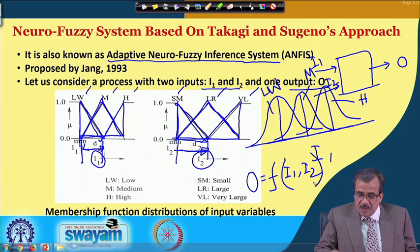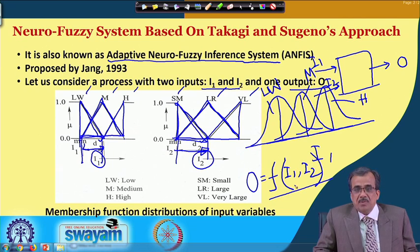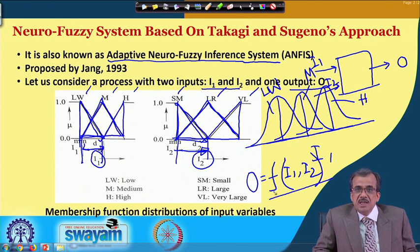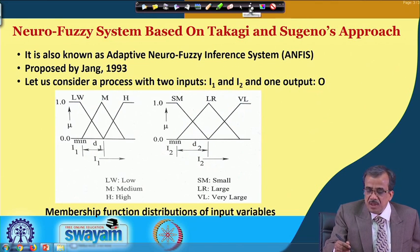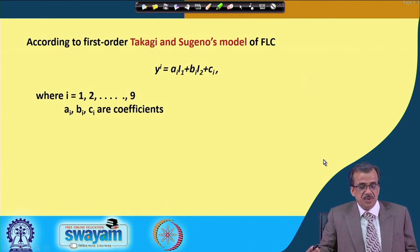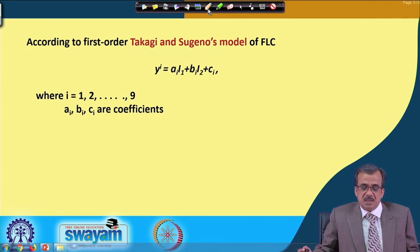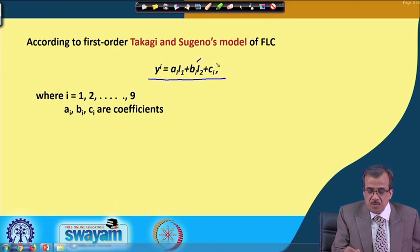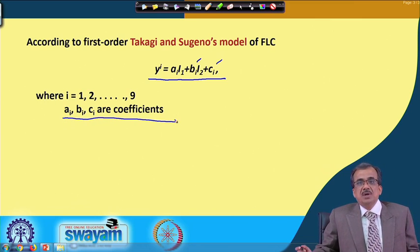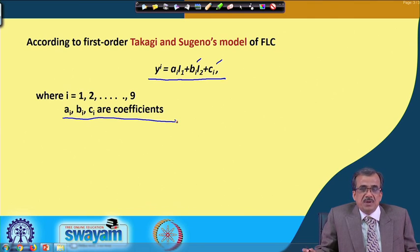We can consider the linear function of the input parameters, or some sort of non-linear function, but most of the time we generally use only the linear function. There is no membership function distribution used for the output; the output is expressed as a function of the input parameters. The output of the i-th rule, denoted by yi, is nothing but ai*i1 + bi*i2 + ci, where i1 and i2 are the input parameters, and ai, bi, ci are the coefficients. These values for the coefficients are to be determined using some optimizer.